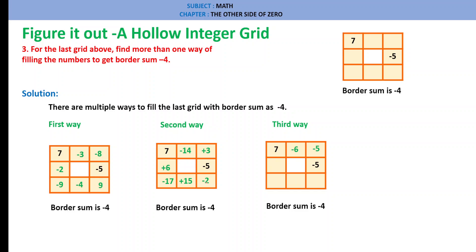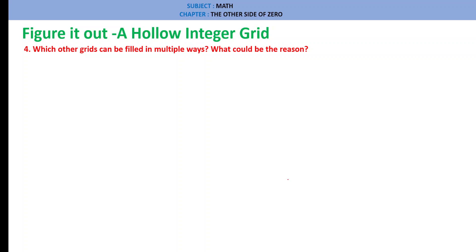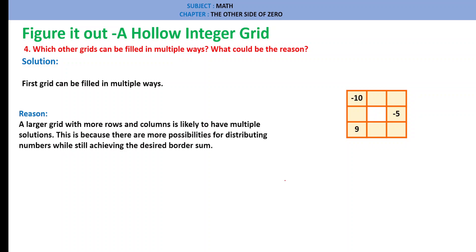Third way: Top row: 7, minus 6, minus 5 = minus 4. Bottom row: minus 2, minus 8, plus 6 = minus 4. Left column: 7, minus 9, minus 2 = minus 4. Right column: minus 5, minus 5, plus 6 = minus 4. Question 4: Which other grids can be filled in multiple ways? Reason: Larger grids with more rows and columns are likely to have multiple solutions, because there are more possibilities for distributing numbers while still achieving the desired border sum.